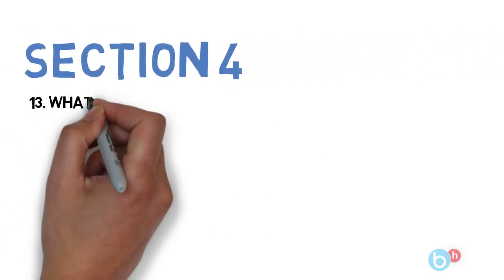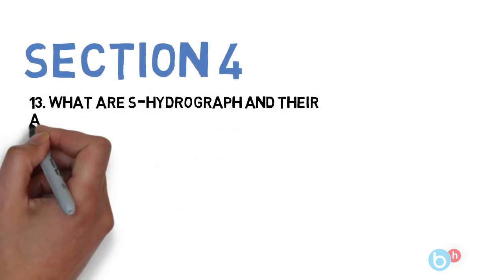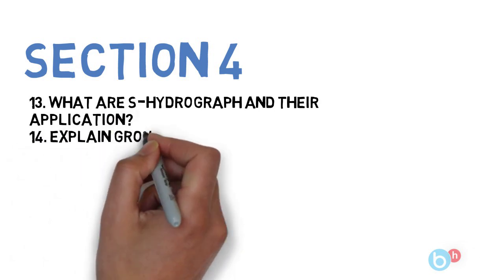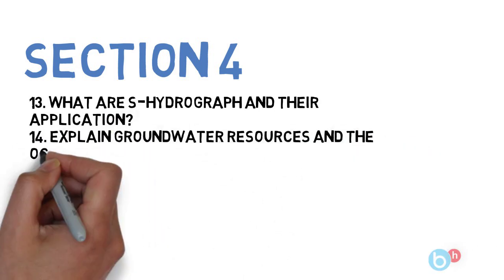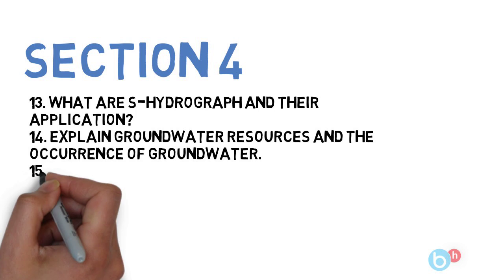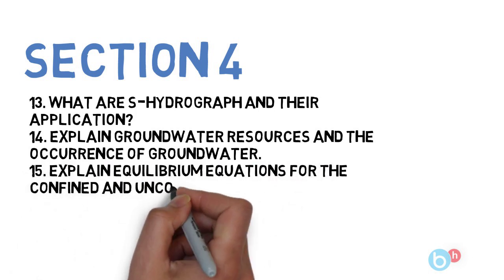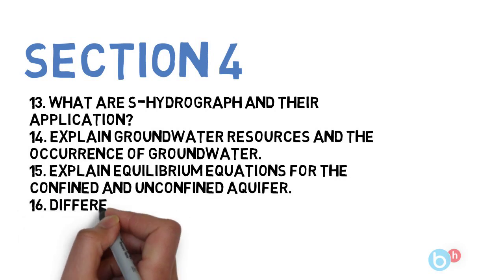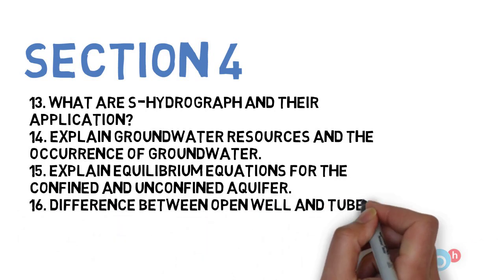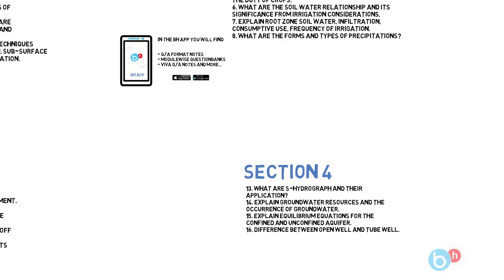Let's go to section four. The first is explain groundwater resources and the occurrence of groundwater. Next is what are S-hydrograph and its application. Next is explain equilibrium equation for the confined and unconfined aquifer. And the last one is difference between open well and tube well. These are the 16 important questions that you need to do for WRE.